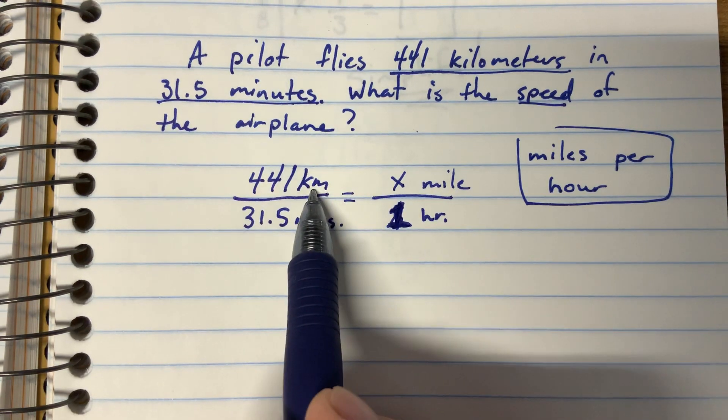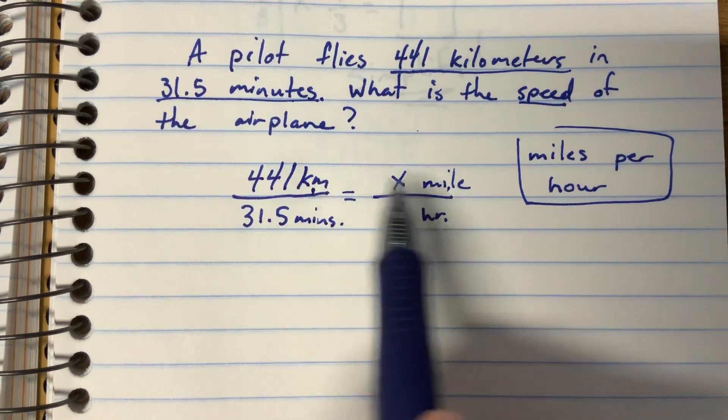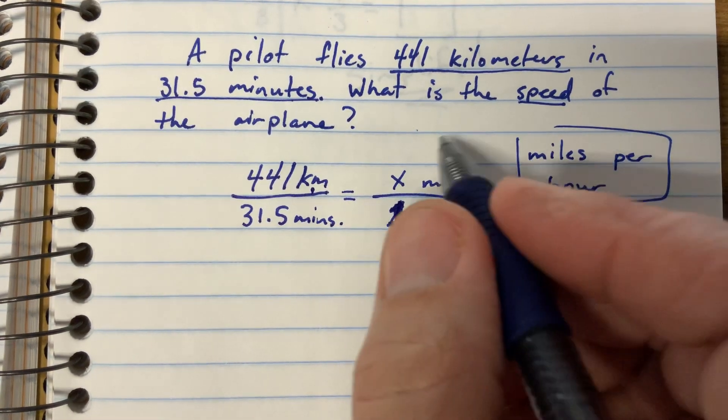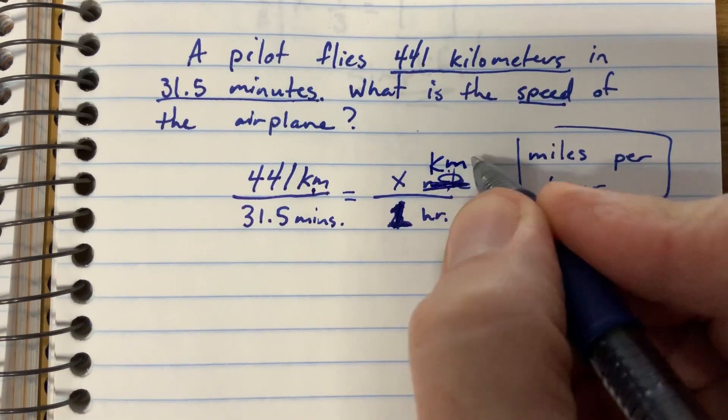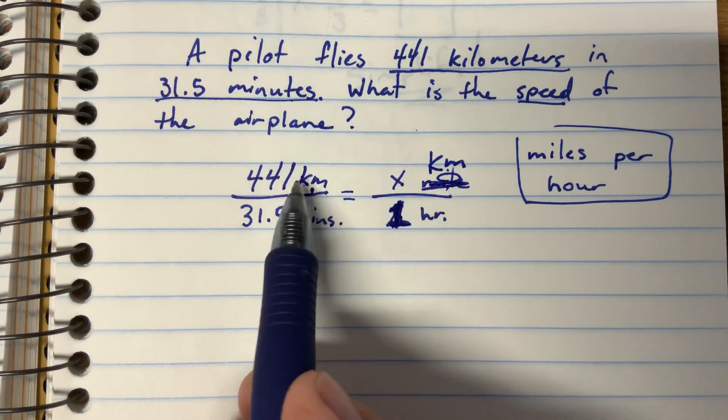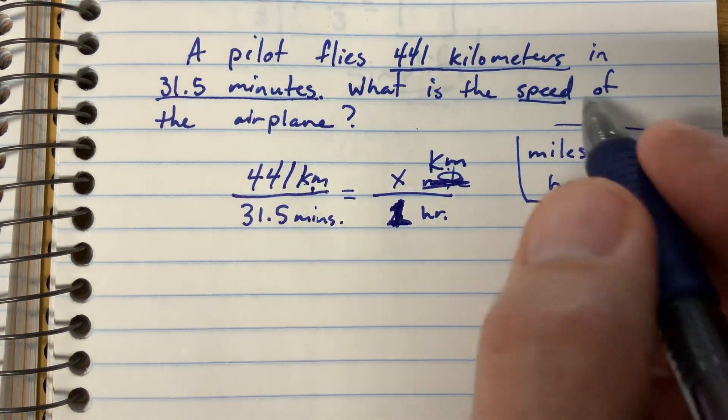We have kilometers, miles. Oh wait, we can't do that. Even though this plane must not be flying in the United States, we're going to have to change this to kilometers, right? Because we can't have kilometers to miles. So kilometers per hour we're going to find.